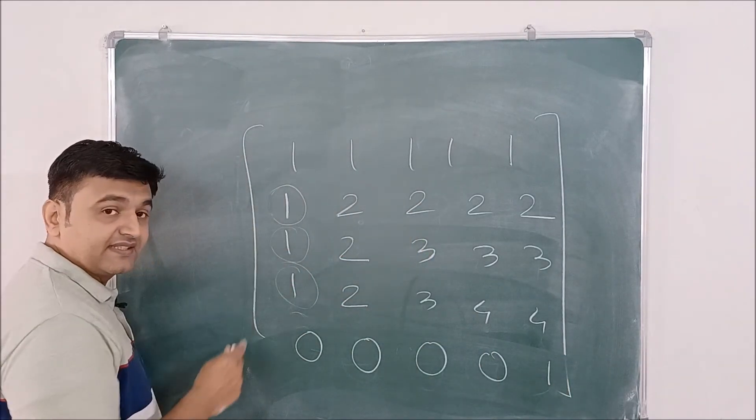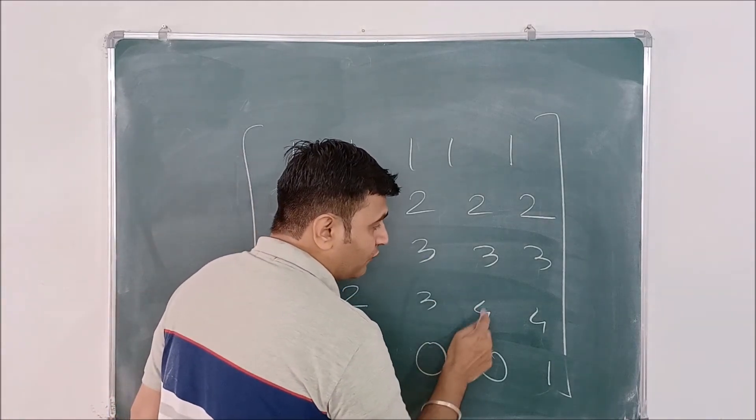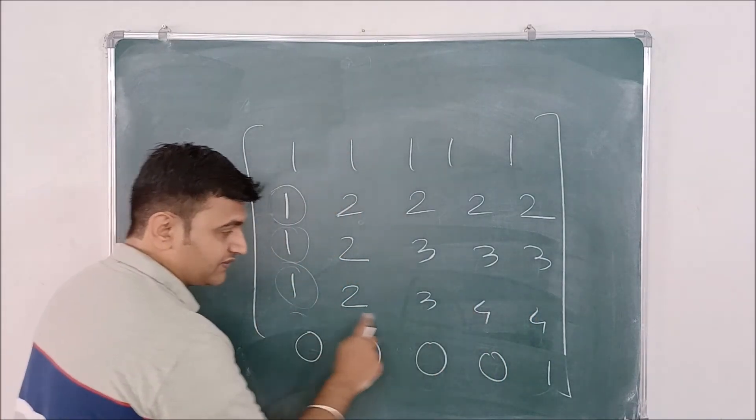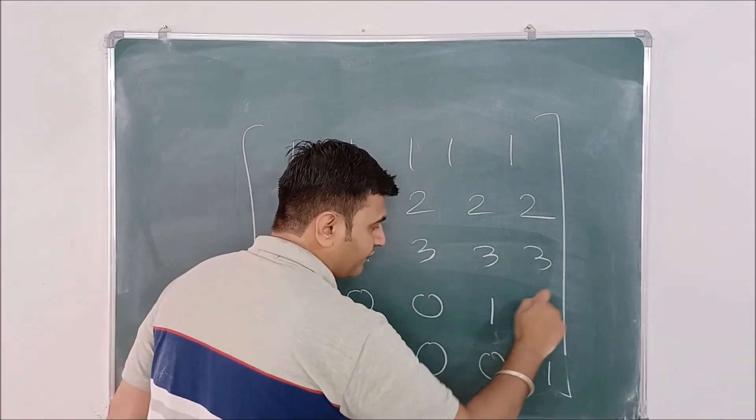Now we do R4 minus R3: one minus one, two minus two, three minus three, four minus three, four minus three. So zero zero zero one one. So here you will have zero zero zero one one.